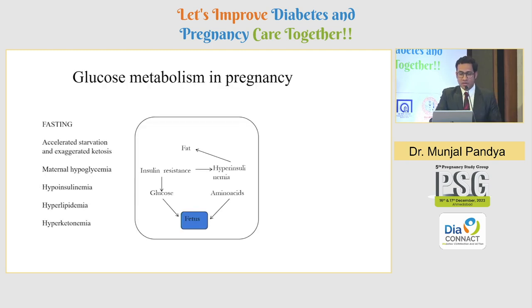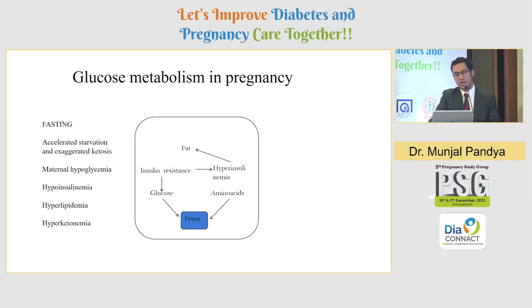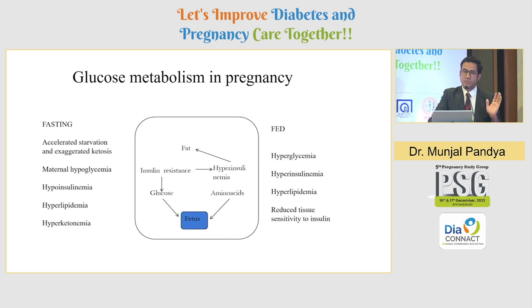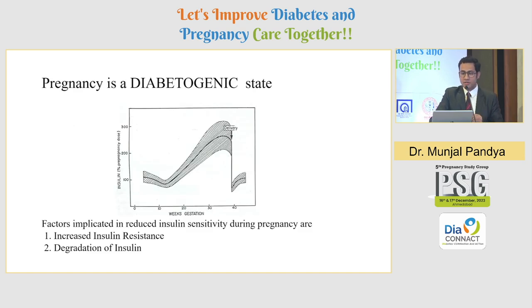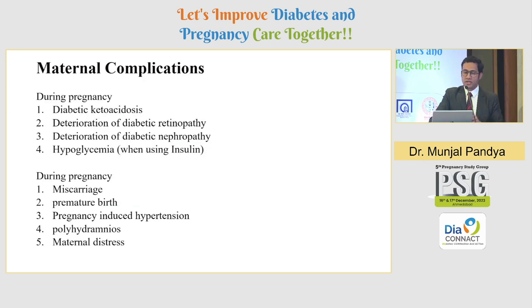In the fasting state, the pregnant female will have accelerated starvation and exaggerated ketosis, maternal hypoglycemia, hypoinsulinemia, hyperlipidemia, and hyperketonemia. In the fed state, there will be postprandial hyperglycemia, leading to hyperinsulinemia — but insulin is quite ineffective, which keeps increasing insulin secretion — along with hyperlipidemia and reduced tissue sensitivity to insulin. Pregnancy is a diabetogenic state for two major reasons: increased insulin resistance, and faster degradation of insulin.